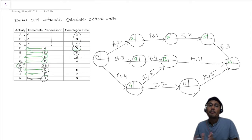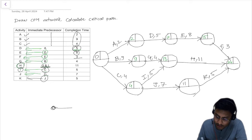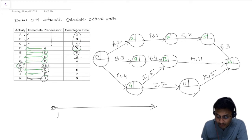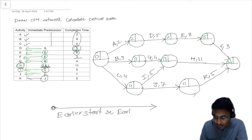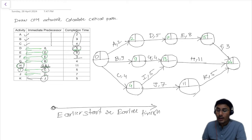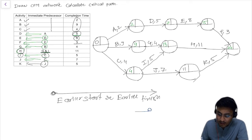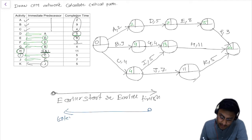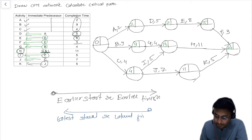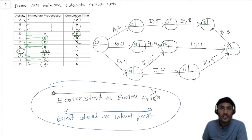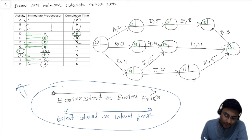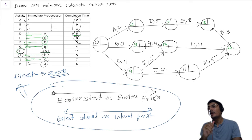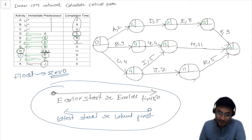This is the forward pass calculation — from left to right we calculated the early start and early finish. Now we are going to do the backward pass calculations from right to left to get the latest start and latest finish. With the help of these two passes we can identify the float, and if the float of an activity is zero, that activity is considered a critical activity.